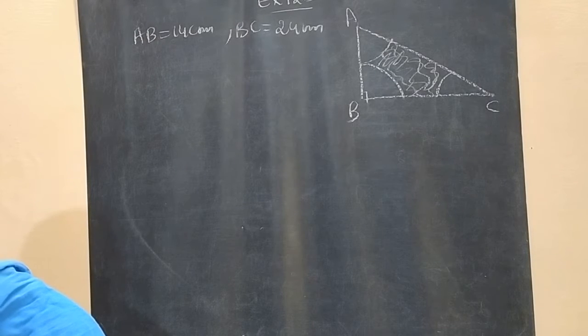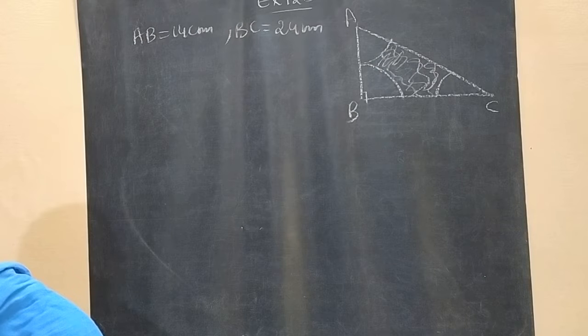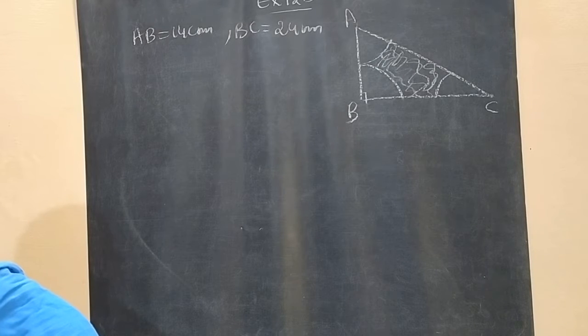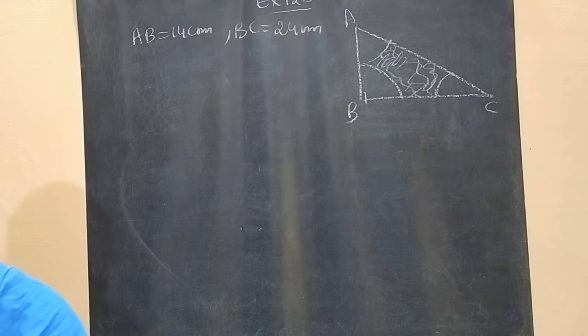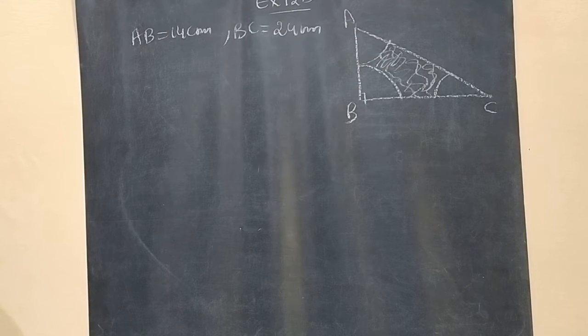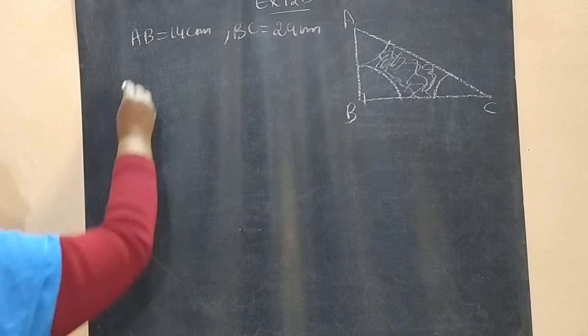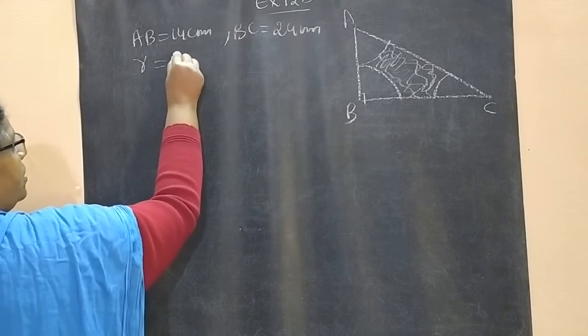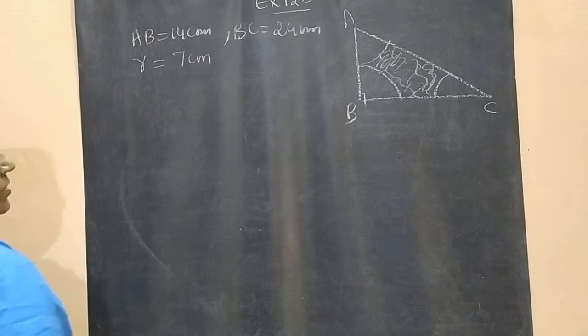Arcs are drawn, each of radius 7 cm. Find the area of the shaded region. So arcs are drawn with radius 7 cm.